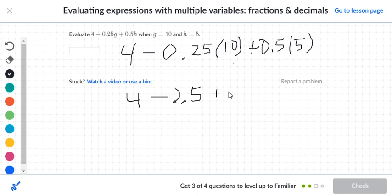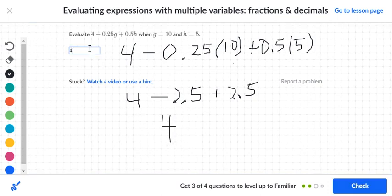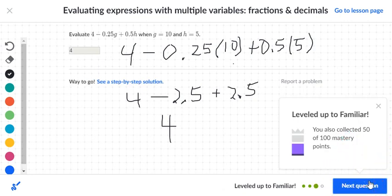Here, 0.5 times 5 gives you 25, but you've got to slide the decimal over one place, so that becomes positive 2.5. You can clearly see that these two numbers will cancel out and become 0, so you should just have 4 as your answer. Let's check that and it is correct.